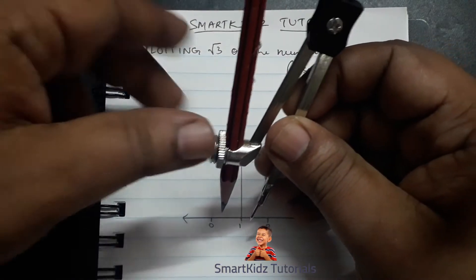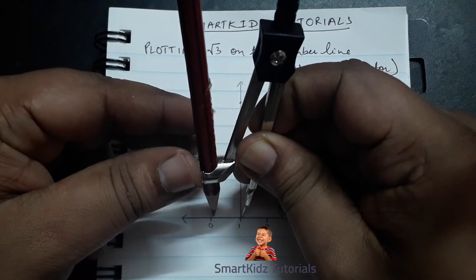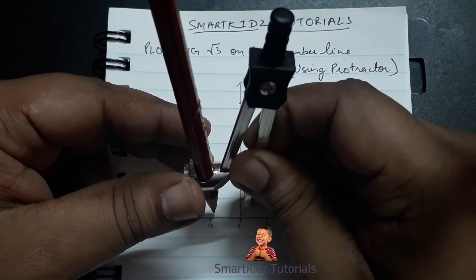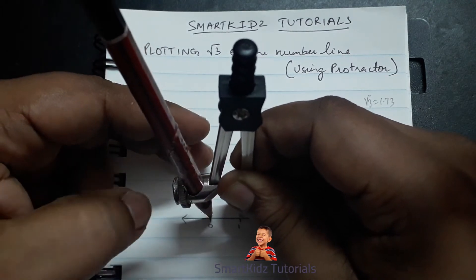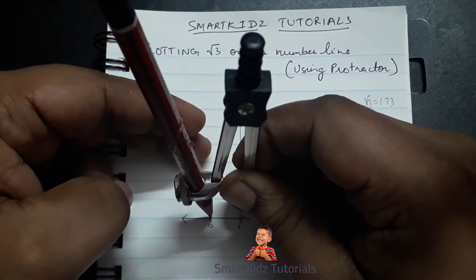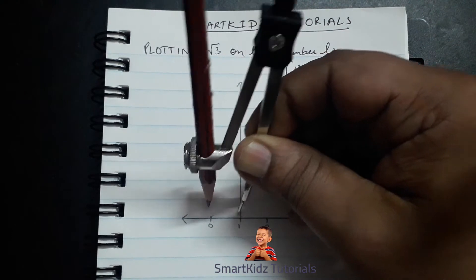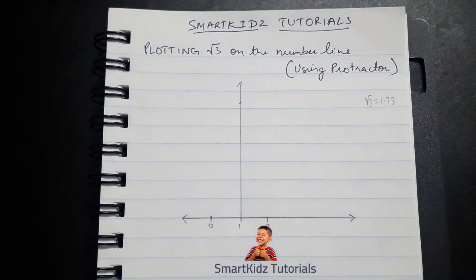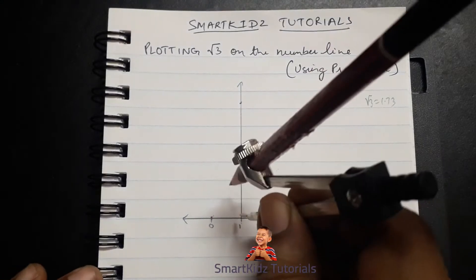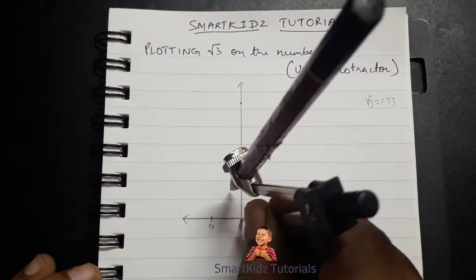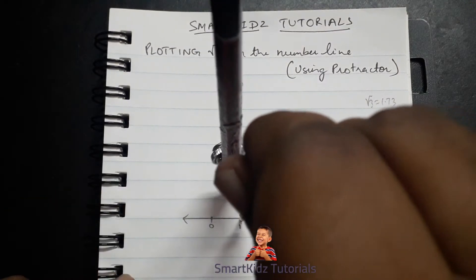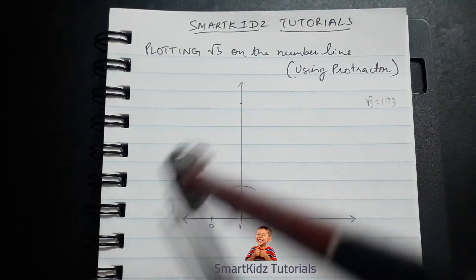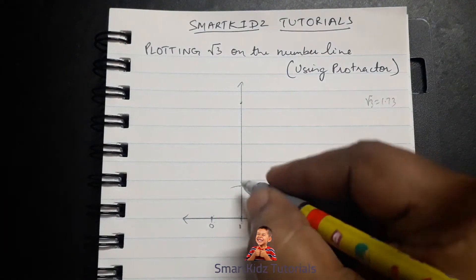You should know this from our previous construction of root 2. For those of you who do not know how to construct root 2, or would like to revisit it, the link can be found in the description box below. I'm just going to cut one unit from this line, and where the arc cuts the line — that is where one unit will be. There you go — mark this point.